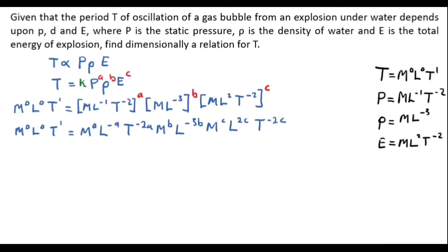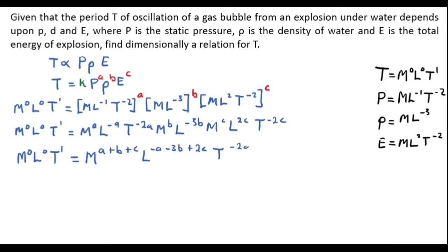Since everything is multiplying, let's group the dimensions by adding the powers. For M we add the powers of M; for L we add the powers of L; for T we add the powers of T. The left-hand side stays as M^0 L^0 T^1. Our task is then to compare the powers of each respective dimension.